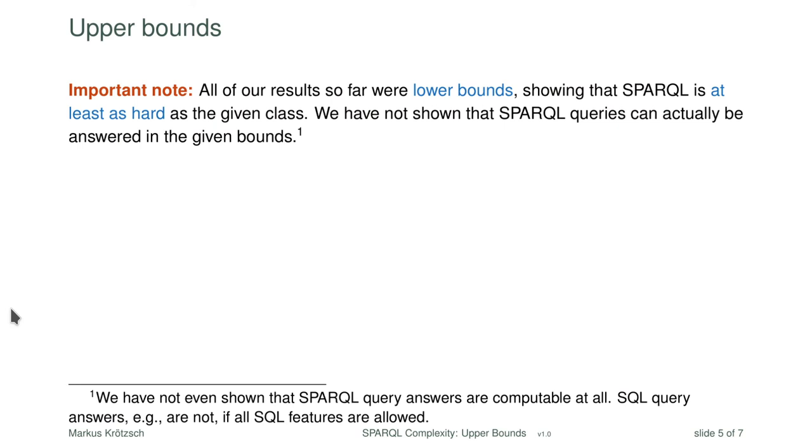This is actually the case for SQL. From SQL-99 onwards, the standard describes a query language for which query answering is undecidable — meaning there is no algorithm that correctly implements all of SQL. It doesn't mean implementations don't exist; it means they are wrong in some cases, either returning wrong answers or failing to stop. Thankfully, this is not true for SPARQL. For SPARQL we can find matching upper bounds, though establishing them properly is not entirely straightforward.